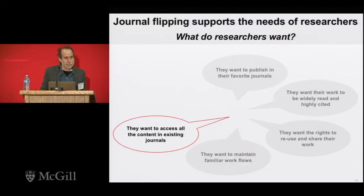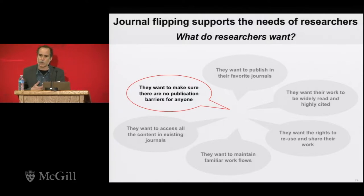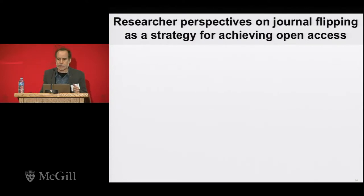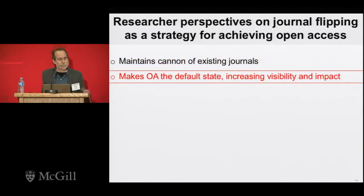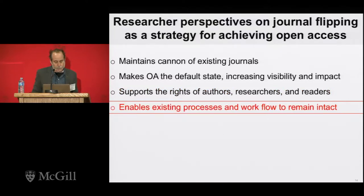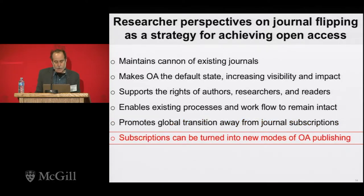Researchers want to access all content in existing journals without encountering paywalls, but they also don't want to create a system with barriers to publishing. The idea behind journal flipping — taking existing journals and making them open access — is that it maintains the canon of existing journals, makes open access the default state increasing impact and visibility, supports author and reader rights, enables existing workflows to remain intact, and promotes the global transition away from subscriptions. The savings from reallocation of subscription monies can be turned into new modes of open access publishing.